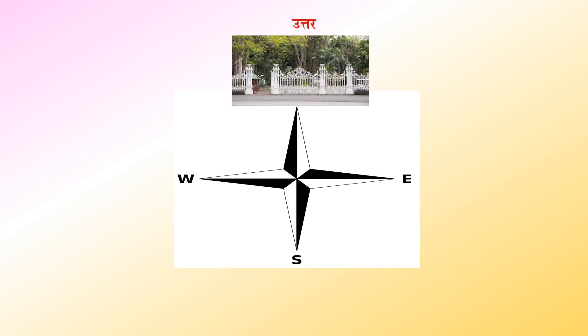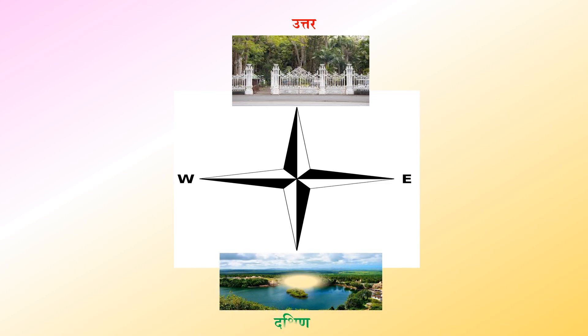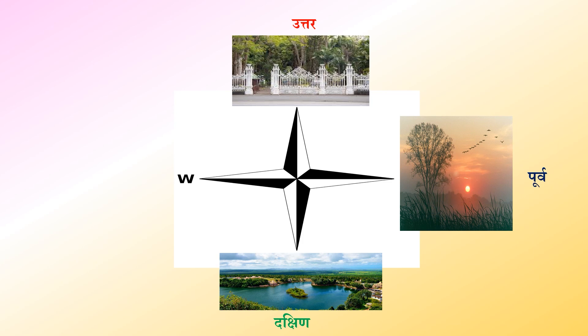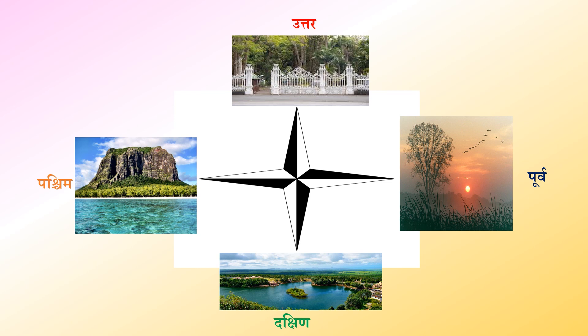अब दिशाओं को देखते हैं — इनको बोलते हैं Cardinal Points. 'उत्तर दिशा में पॉपले मुस्का बाग है।' 'दक्षिण दिशा में गंगा तालाब है।' 'पूर्व दिशा में सूर्योदय होता है — Sunrise होता है।' 'पश्चिम दिशा में Le Mon Bravan बहार है।'